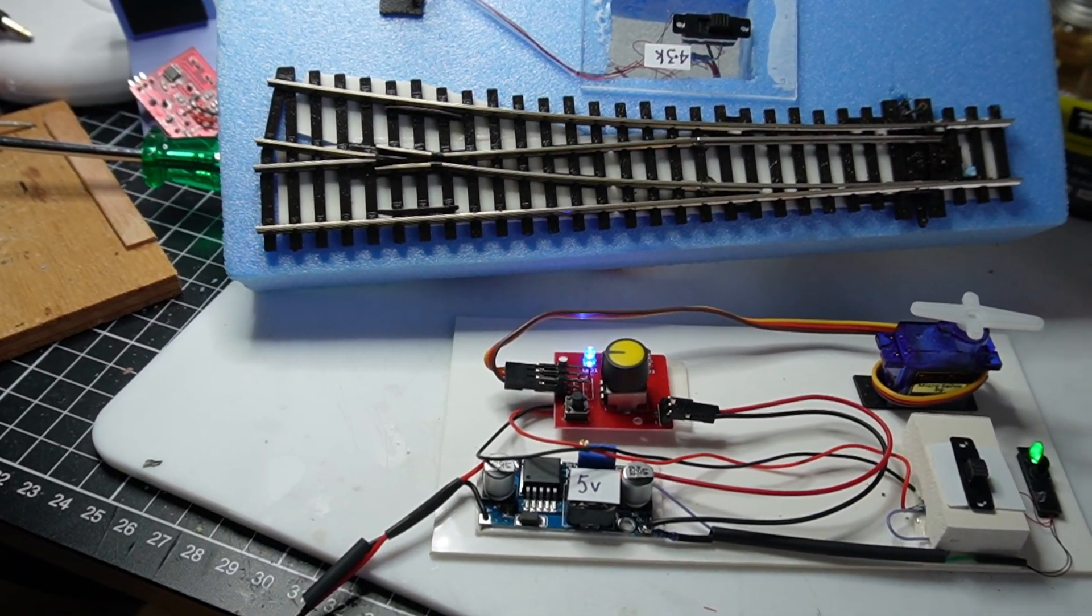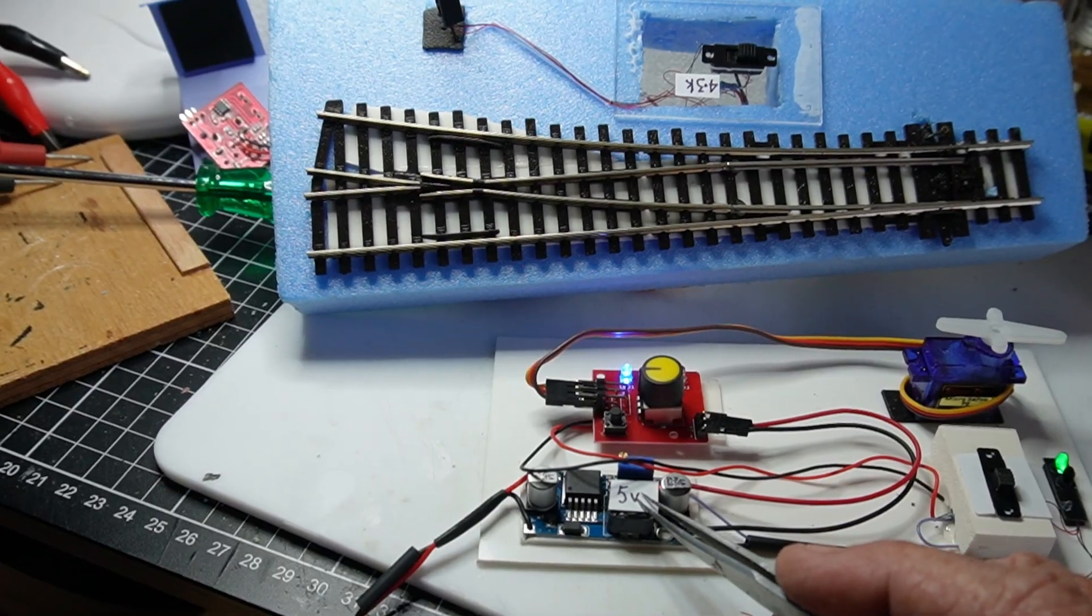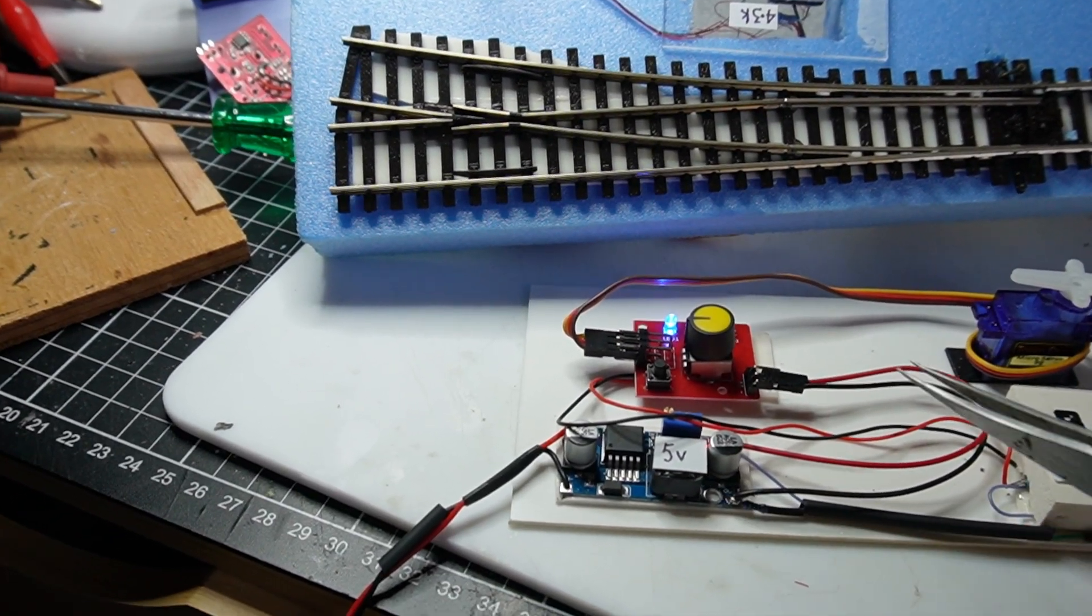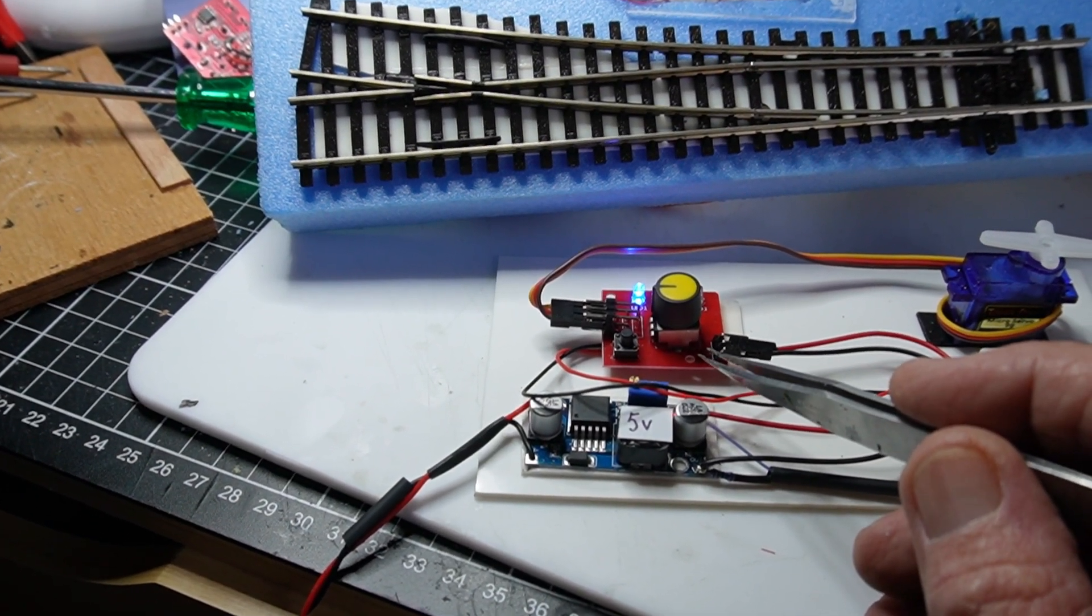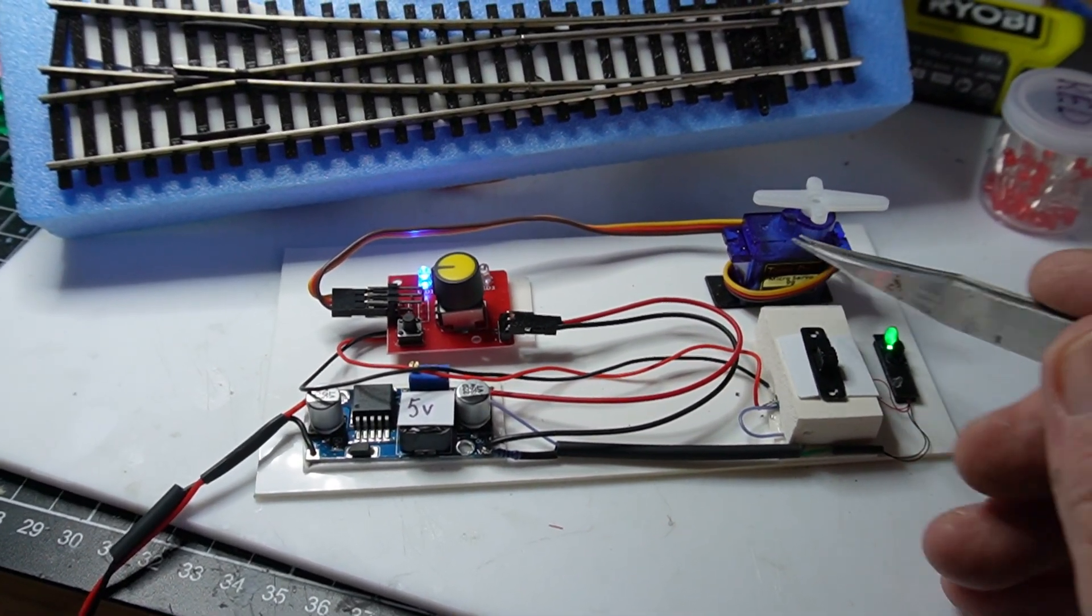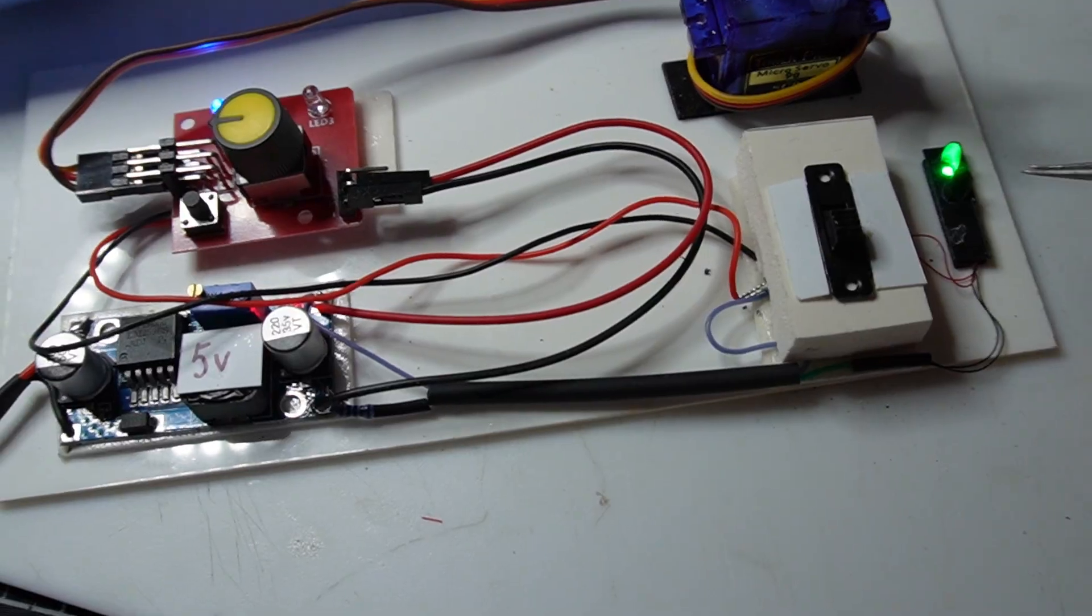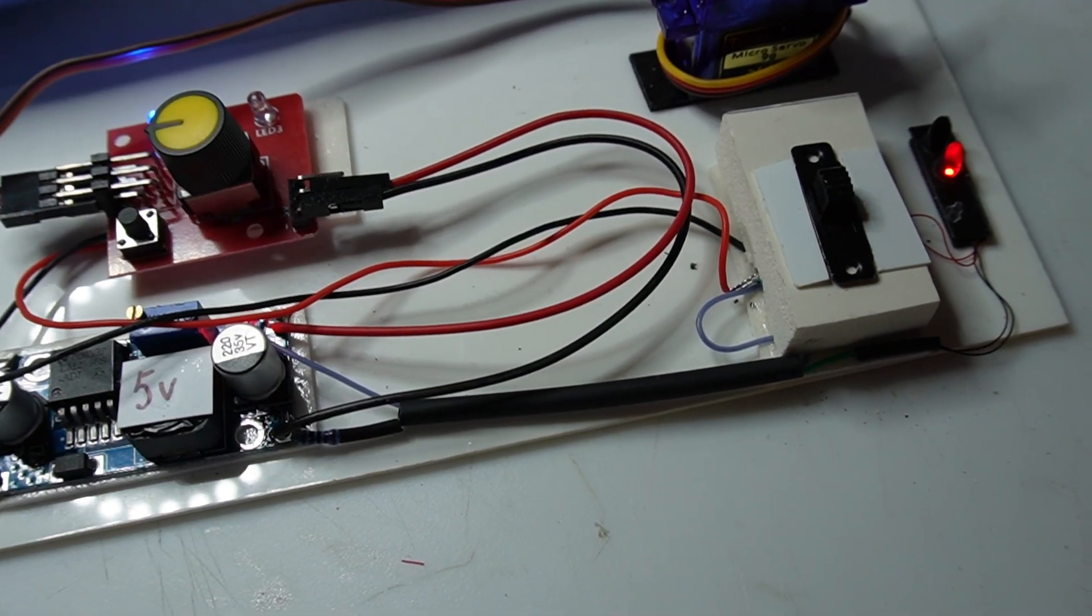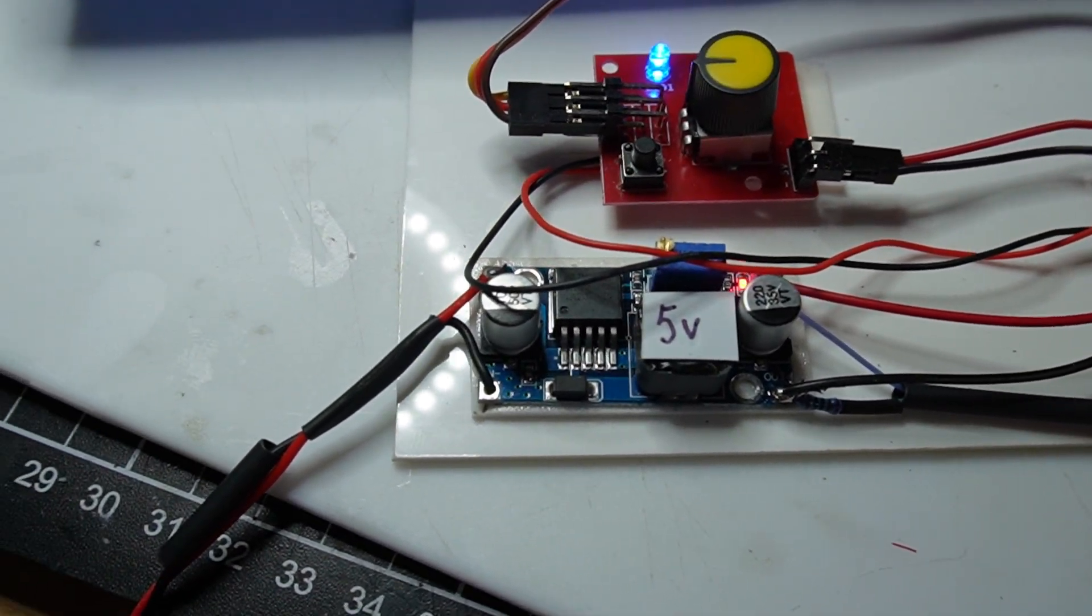As I mentioned the cost of all of this is just so cheap, about $2.30 or something through Aliexpress. The buck set down DC converter, they were $0.99, you can get them for $0.91 for the servo driver and the servo, that's just a couple of bucks. And I've used 0402 leads for the little dwarf signal that I made, a bit of black styrene and I just put some sticky tape on the back, black foam tape.